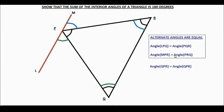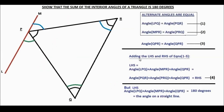We number these three equations as equations 1, 2, and 3, and we add both sides of the three equations — the LHS and the RHS are added. The LHS equals the sum of these three angles, equal to the RHS, the sum of those three angles. But the LHS — angle LPQ plus angle MPR plus angle QPR — is 180 degrees, because these three angles lie on a straight line, and the angle on a straight line is 180 degrees.